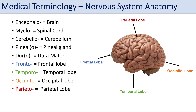So again: fronto for frontal lobe, temporo for temporal lobe, occipito for occipital lobe, and parieto for parietal lobe. You can think of terms like frontotemporal dementia or frontotemporal degeneration, a specific type of dementia. Many of these prefixes can also be combined to indicate a specific area in the brain, such as frontoparietal or temporoparietal.